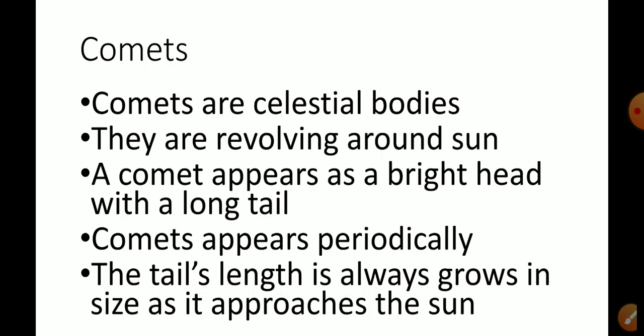The next member of the solar system is comets. A comet is a celestial body present in the solar system, revolving around the sun. A comet has a bright head with a long tail, and it revolves around the sun in a highly elliptical orbit.